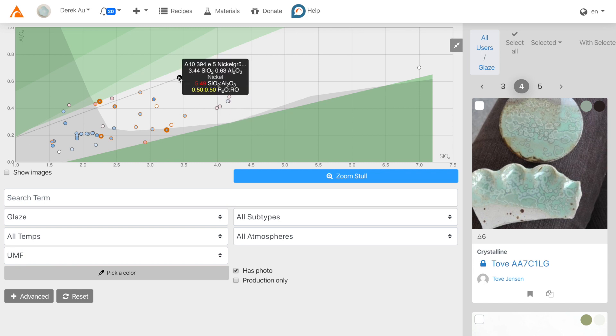In general, low-fire glazes will be located lower in silica and alumina, while mid-fire glazes will be located in the middle of this region, while high-fire glazes will be located in the upper reaches of this region.